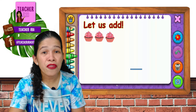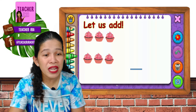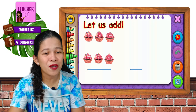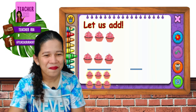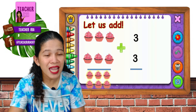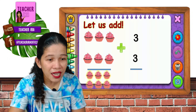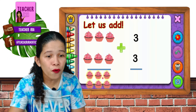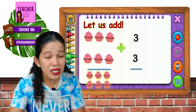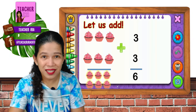Let's have three cupcakes plus three cupcakes equals. Three plus three — let's count on: one, two, three, four, five, six. That's six.